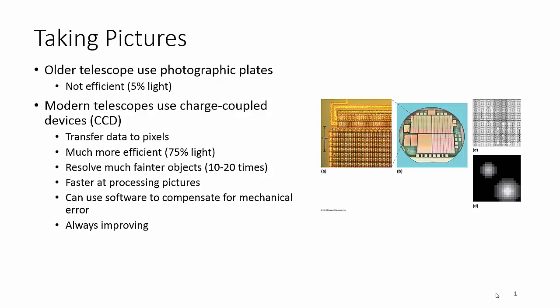Well, computers got better, and so now we move to charge coupled devices, CCDs. Basically, these work in pixels, and they are more efficient, a lot more efficient, still not perfect. You're looking at 75% of the light. However, it can have a better resolution. It resolves much fainter objects and faster processing times. We can actually use computer software to compensate for any errors that we're getting that we know were caused by the telescope or the software programs, and this is constantly improving.